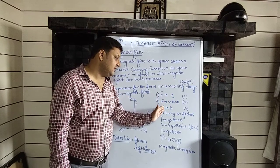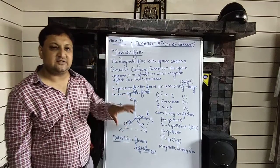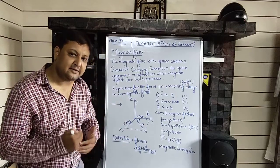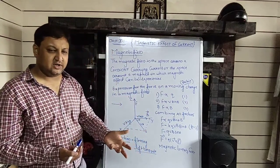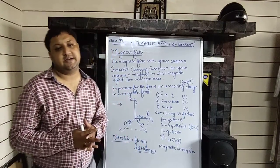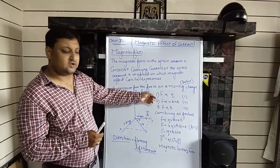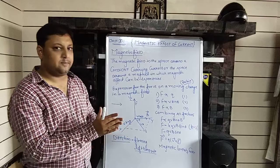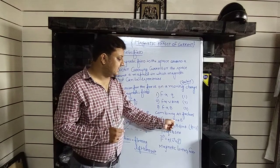Third, force is directly proportional to B, the magnetic field. If you increase the magnitude of the magnetic field in which you are moving the positive charge, the force on it also increases. So we have three factors on which force depends: q, v·sinθ, and B.